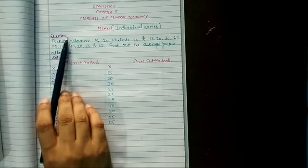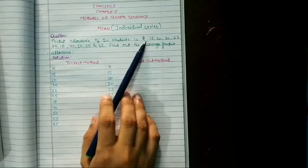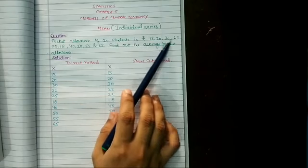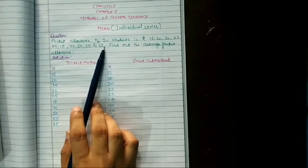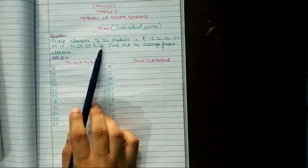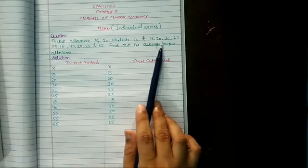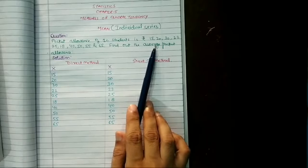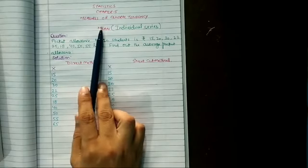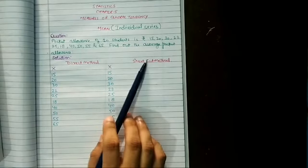The question is: pocket allowance of 10 students is rupees 15, 20, 30, 22, 25, 15, 40, 50, 55, and 65. Find out the average pocket allowance. We have to find out the average, or we can say the mean. We will solve this question by two methods: direct and short-cut method.